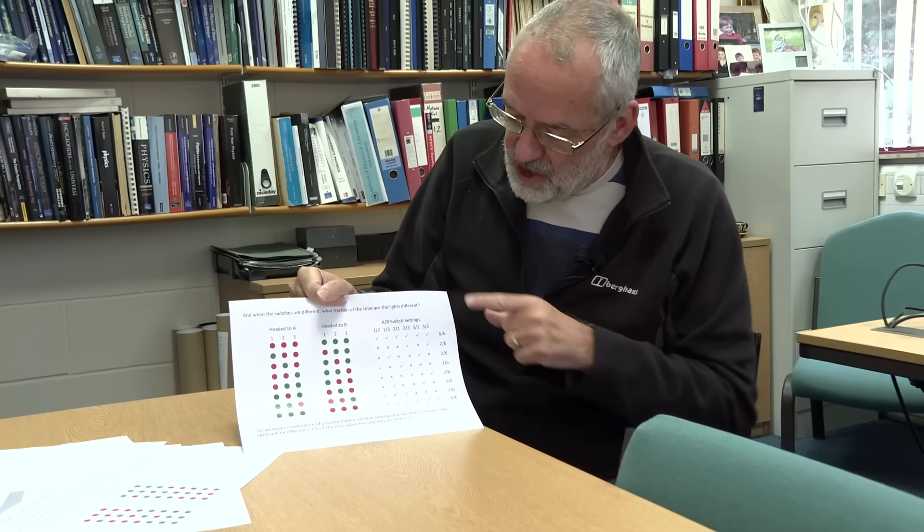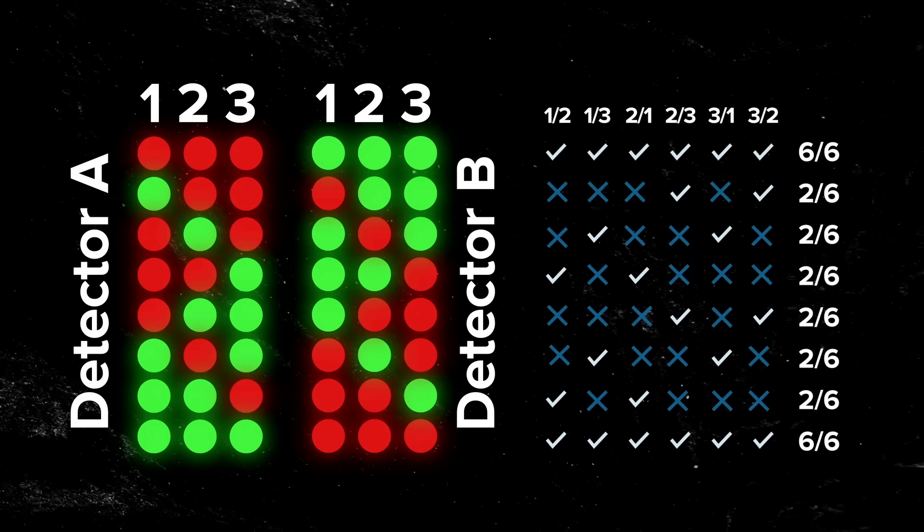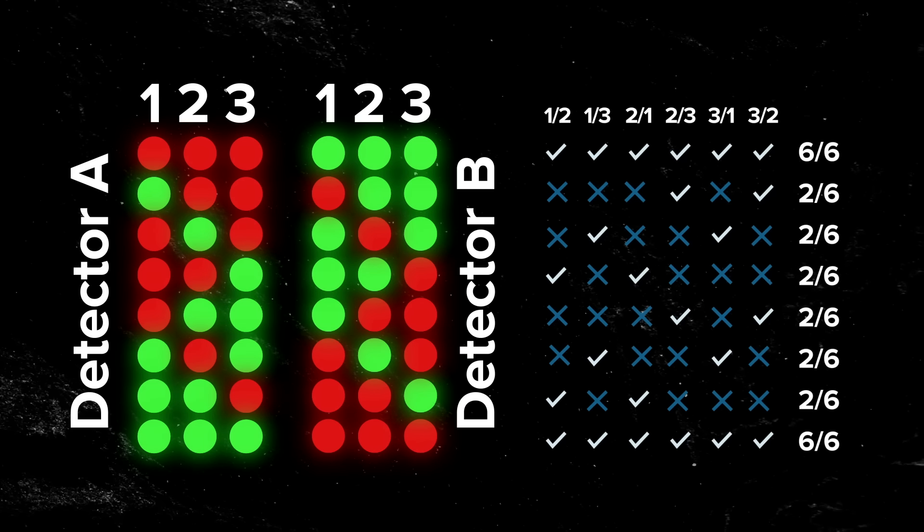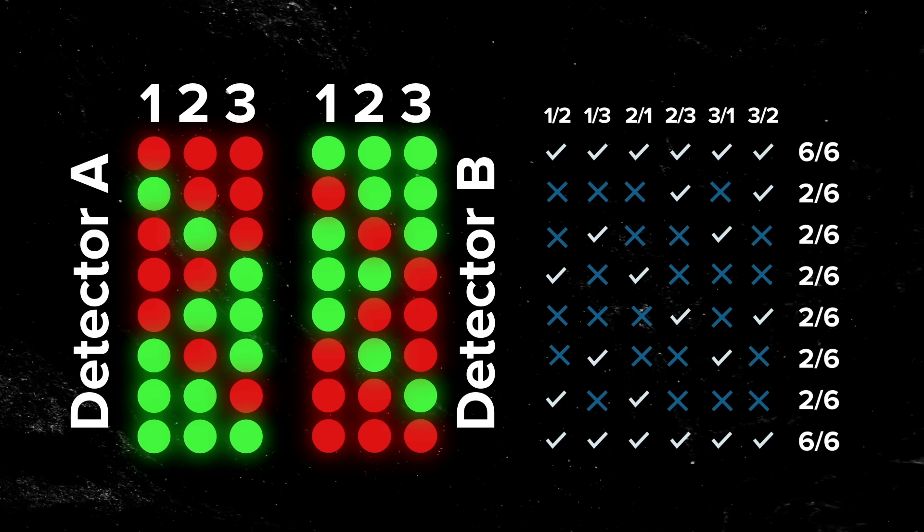The only exception is if both entries in the row are the same — say, always red and always green — in which case they're always different, giving six out of six. But for every other combination it's a third. So whatever the laws of physics dictate the particles choose, the fraction of times the colors come out different is always a third or more. But remember: the actual quantum mechanical prediction says the colors should come up different only a quarter of the time when the switches are in different positions. There's a contradiction — a paradox.